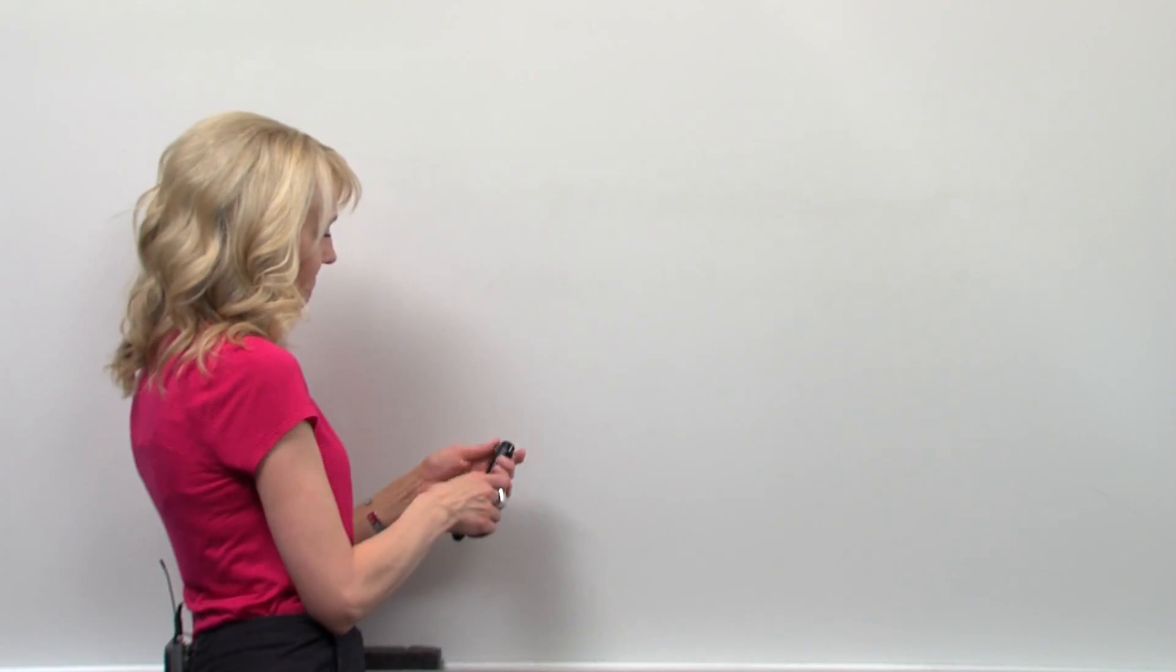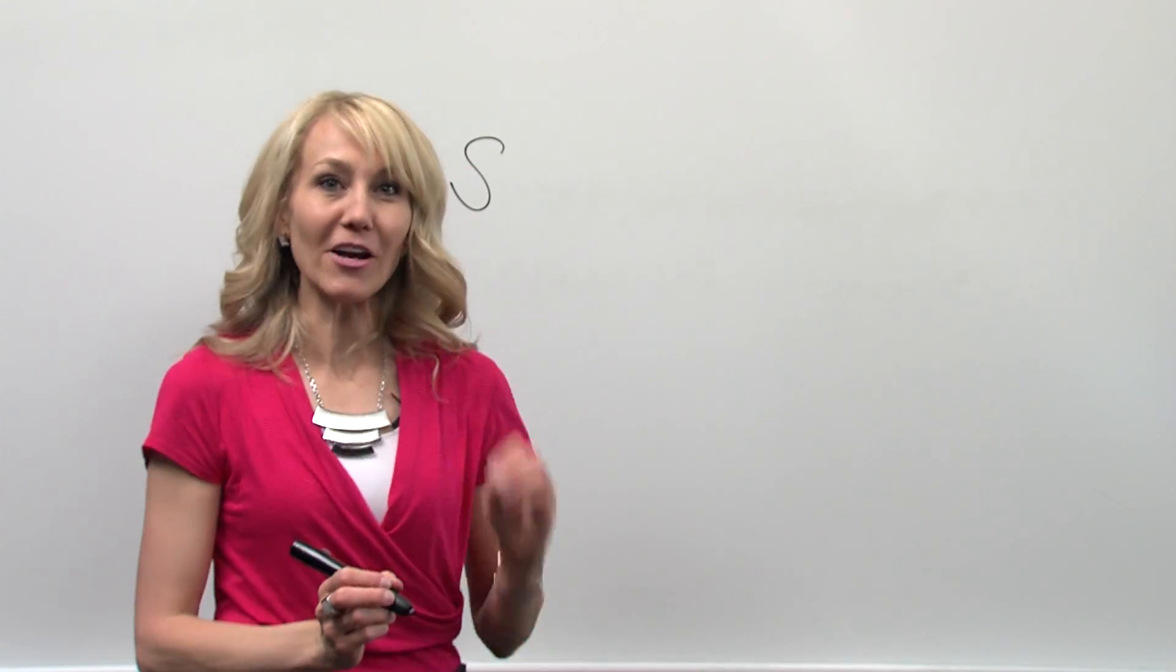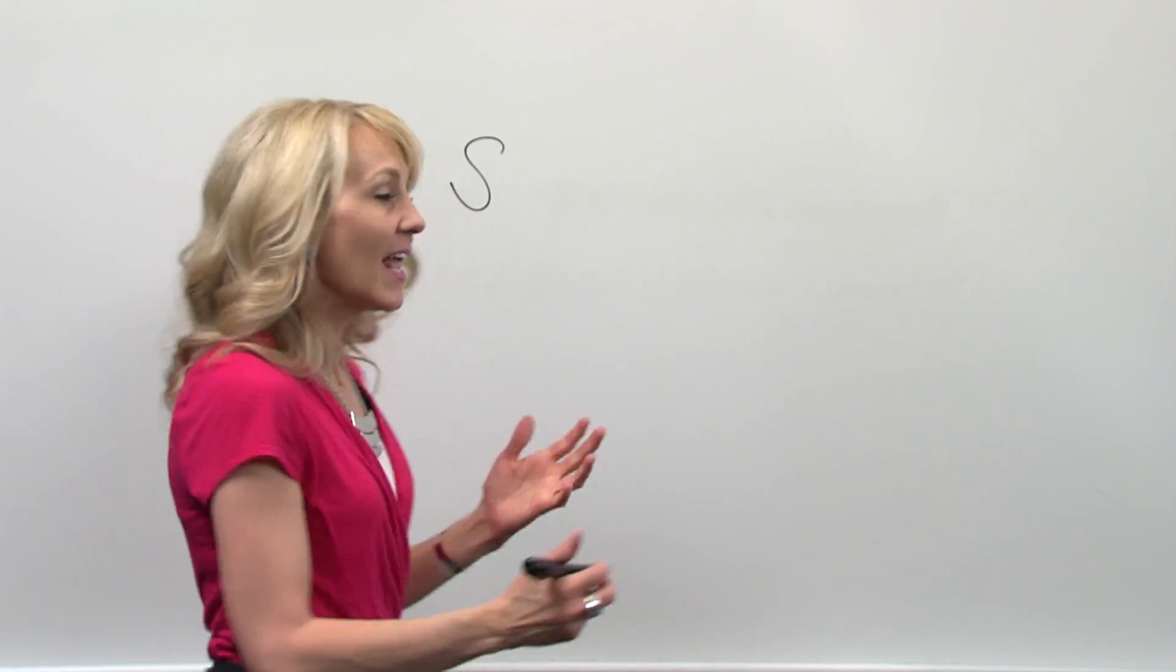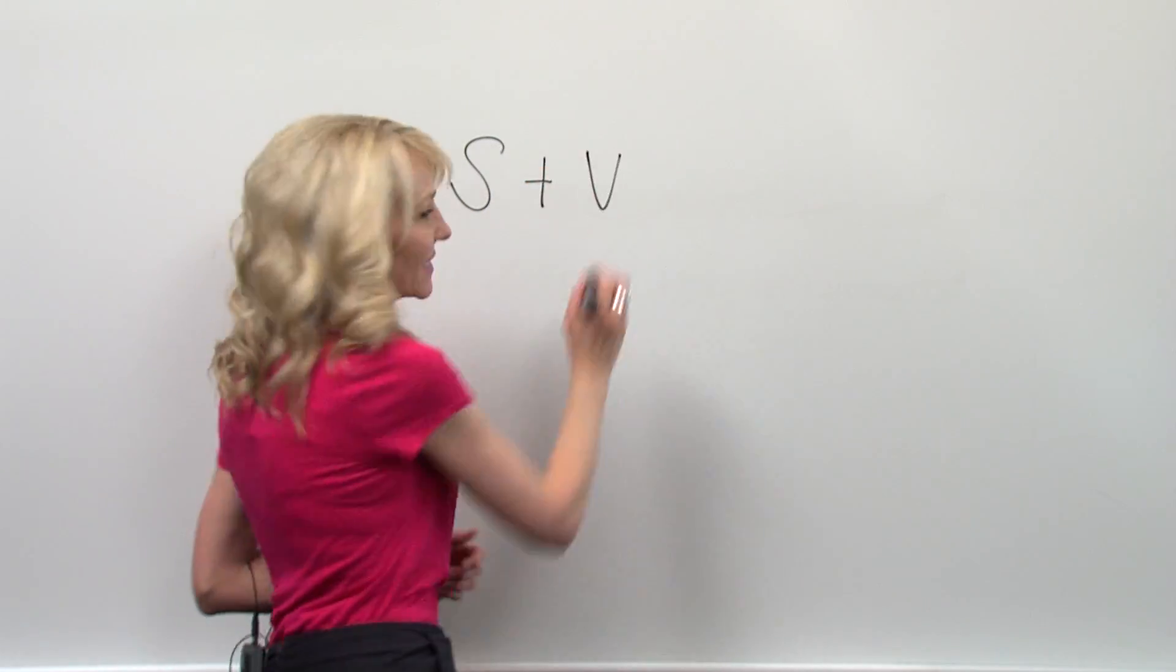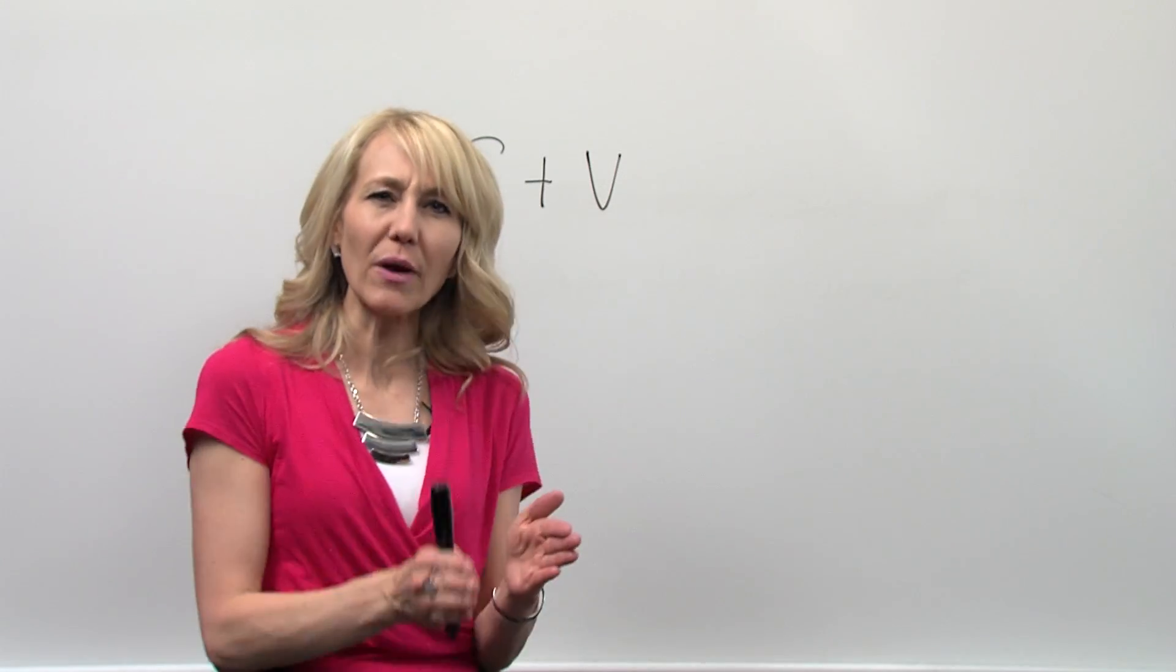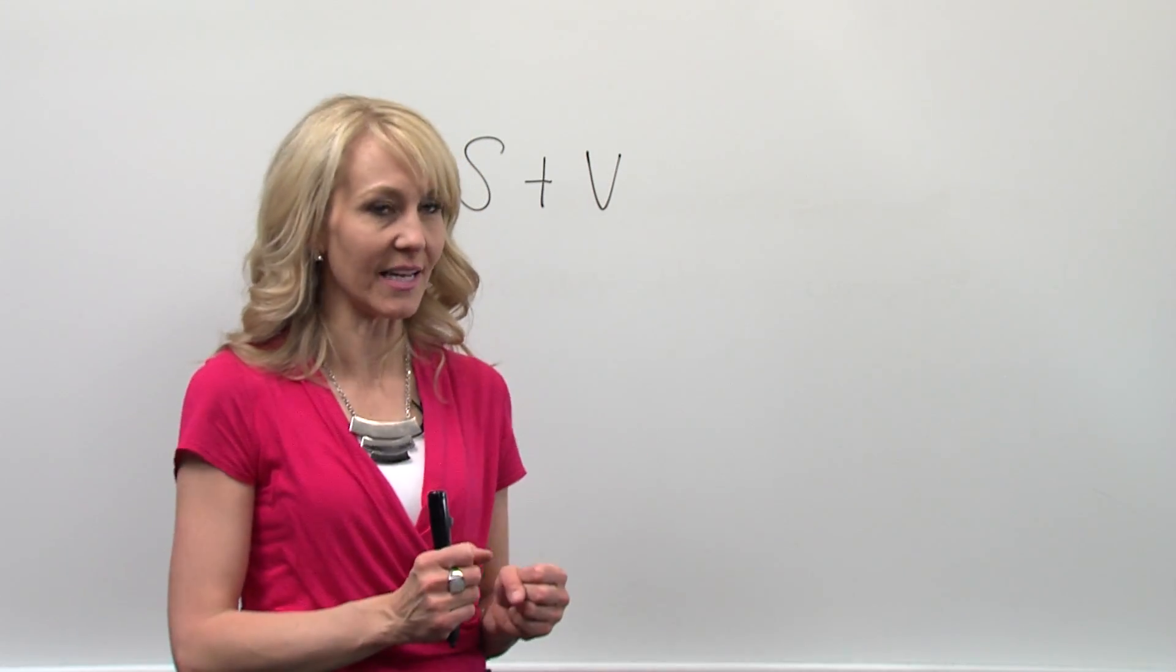First, we're going to talk about our subjects and identify what rules and guidelines help us have powerful subjects. Then, we're going to talk about our verbs and identify how to write clear, strong, active verbs that convey powerful action in the sentence.